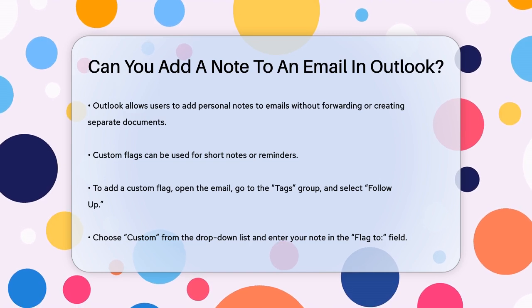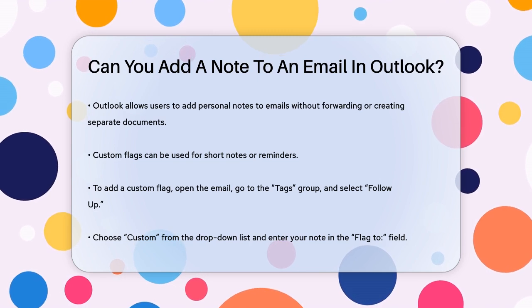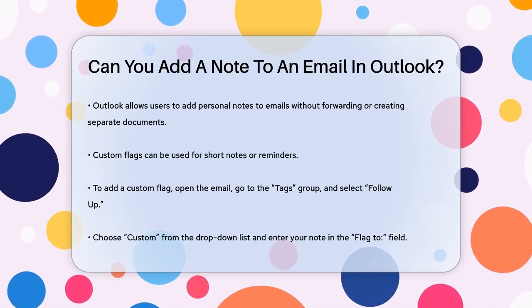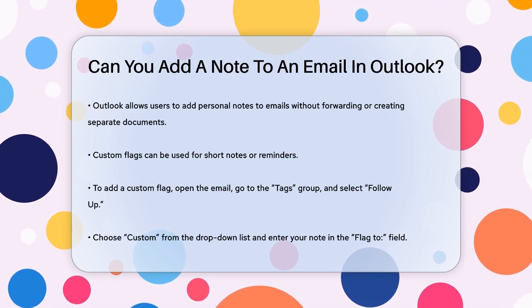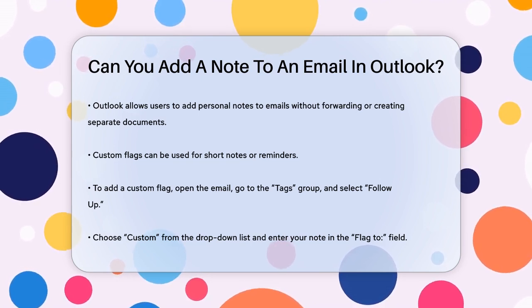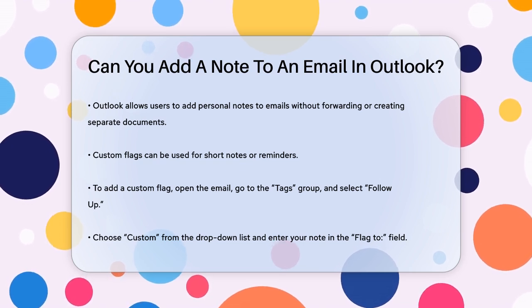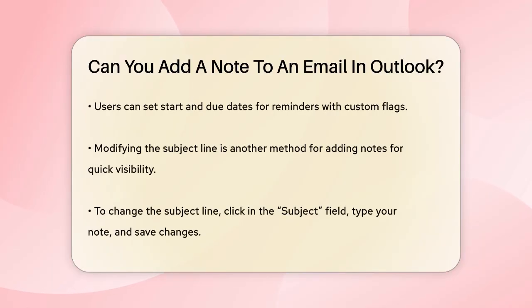First, let's talk about using custom flags. This is a great option if you have short notes or reminders. To do this, open the email you want to add a note to, go to the Tags group, and select Follow Up. Then choose Custom from the drop-down list. In the Custom dialog box, enter your note in the Flag To field. You can also set start and due dates if you need a reminder. Click OK, and a flag with your note will appear on the email, but it won't show up in your Outlook task list.